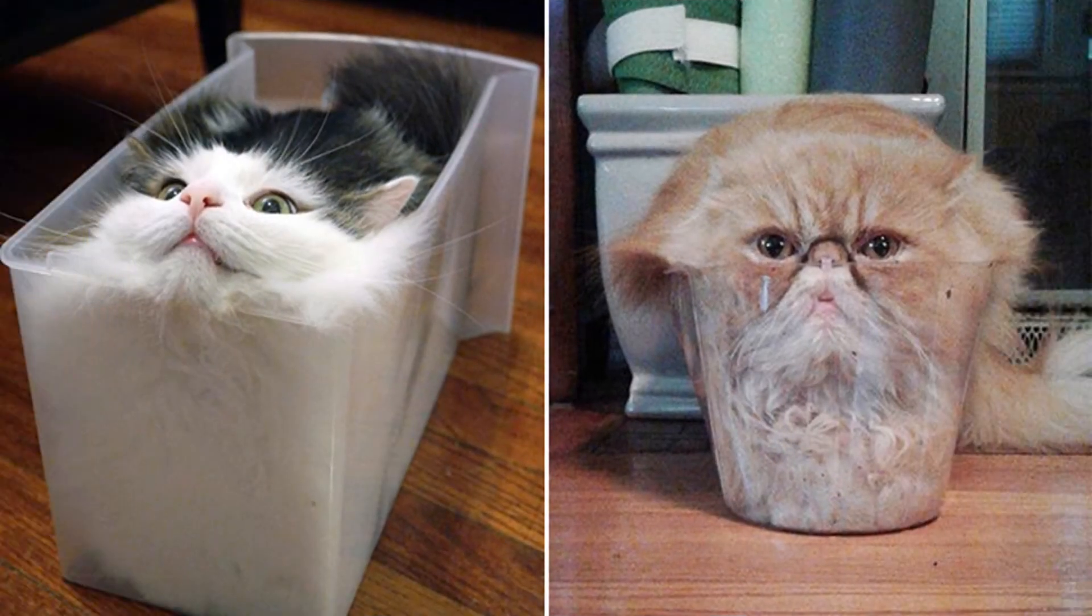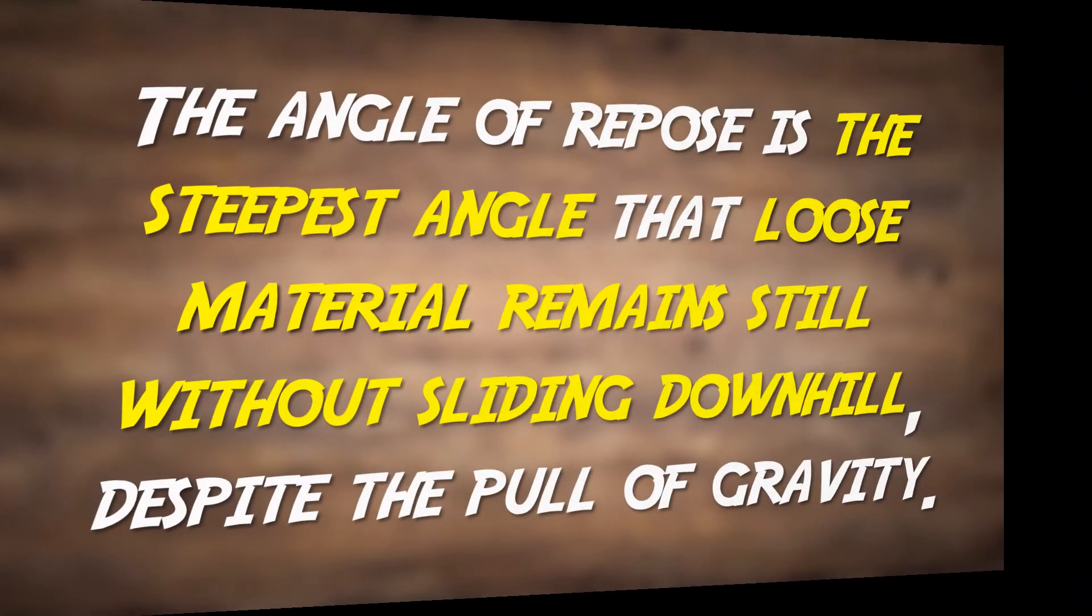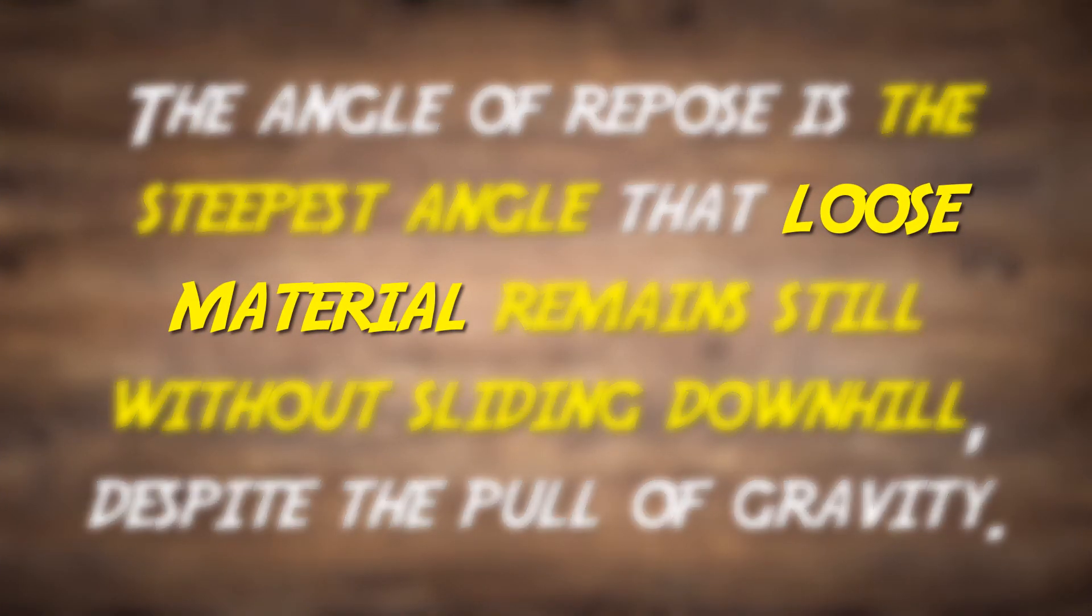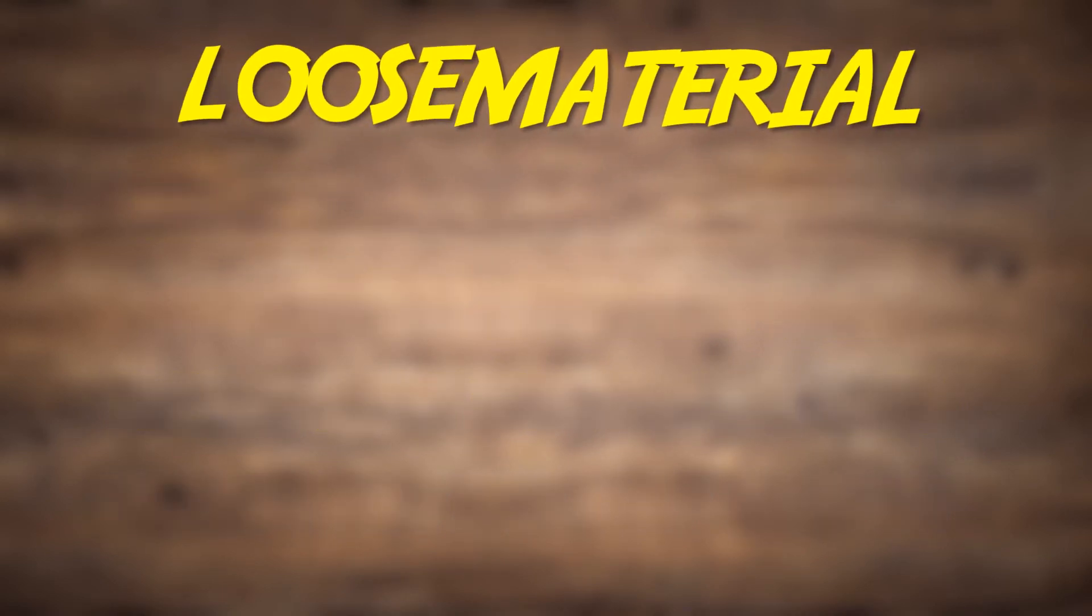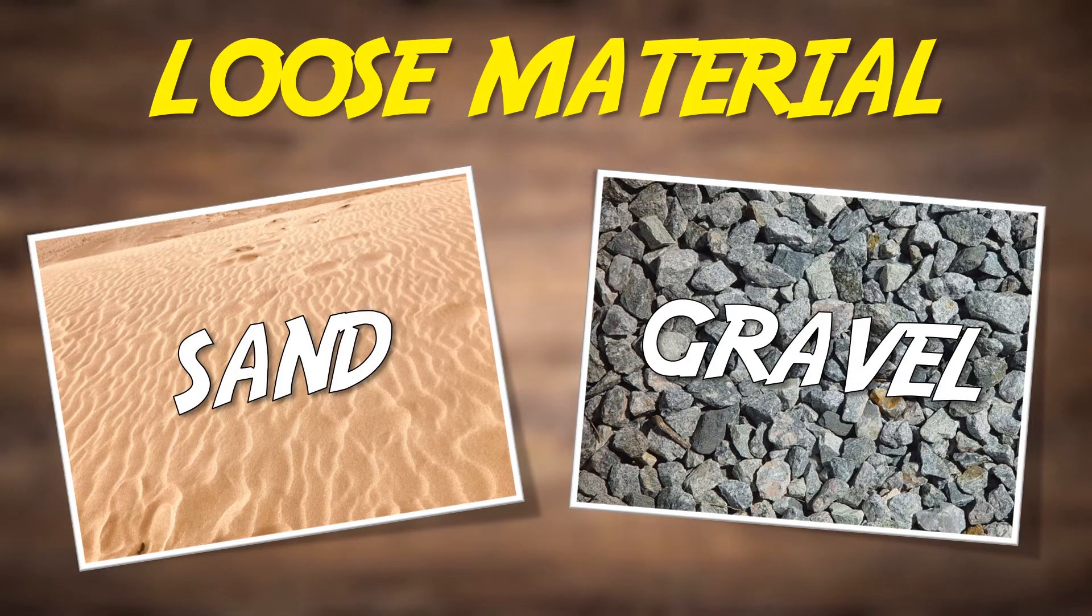However, given that cats are partly liquid, the definition introduced at the beginning states loose material as the medium. That loose, freely movable material can be such things as sand or gravel.